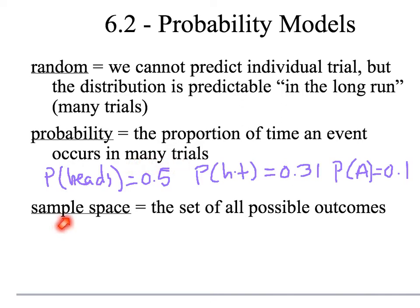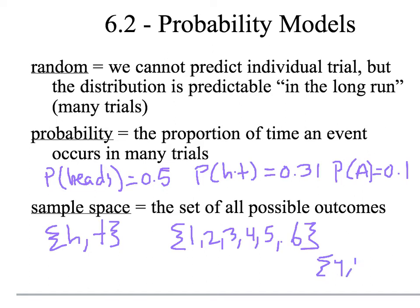Next term is sample space, which is just the set of all possible outcomes. For example, when you flip a coin, what is the sample space? It's heads and tails. When you roll a die, what is the sample space? It's 1, 2, 3, 4, 5, 6. If you pick a student and say, what grade are they in? The sample space is 9, 10, 11, 12.